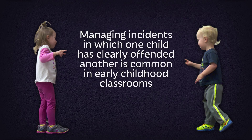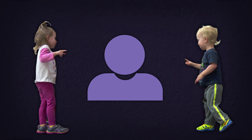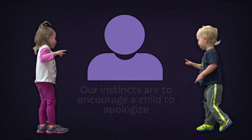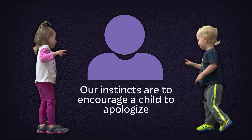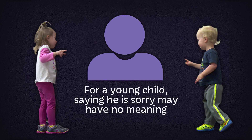Managing incidents in which one child has clearly offended another is a common classroom occurrence in early childhood programs. The children — those directly involved and others — will carefully watch how their teachers respond. Our instincts as adults are to encourage a child to apologize, to acknowledge his fault, and to demonstrate that he knows what he did wrong.